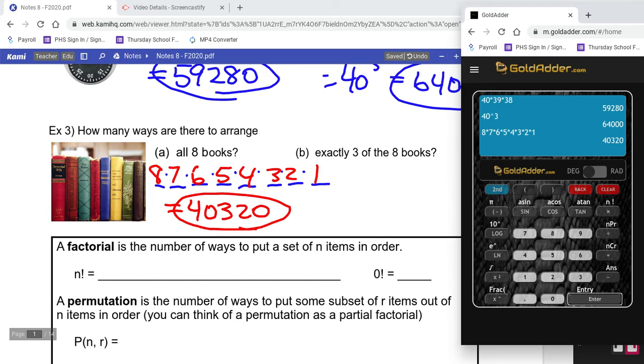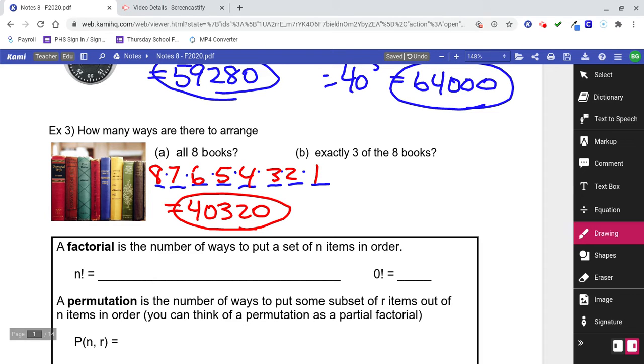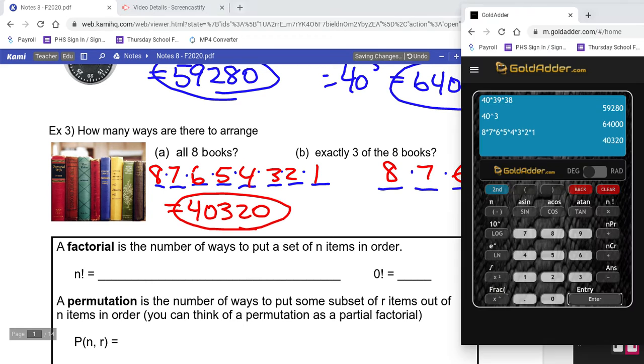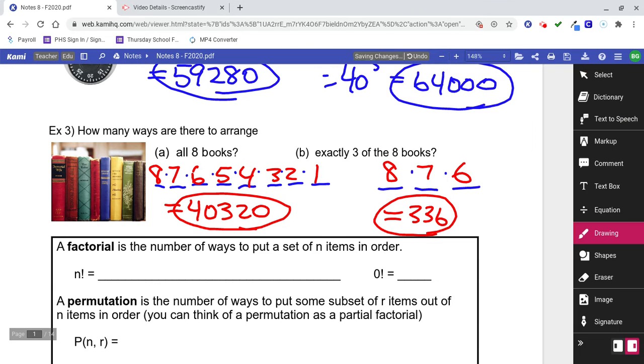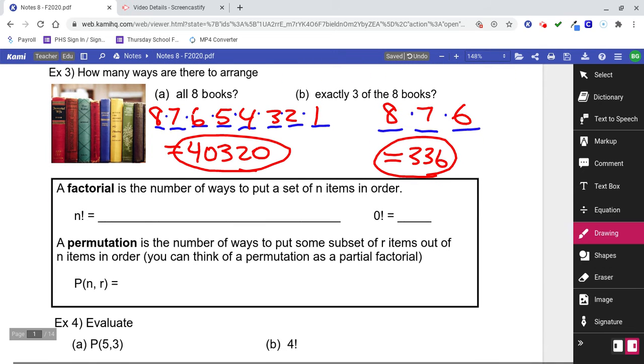Part B says exactly three of the eight books. We're still placing books on the shelves, but how many blanks would I have in my blanks problem? Just three this time. First and second and third. How many choices would I have for that first position? Eight, and then seven, and then six. So 8×7×6 equals 336. And that brings us to an important concept.